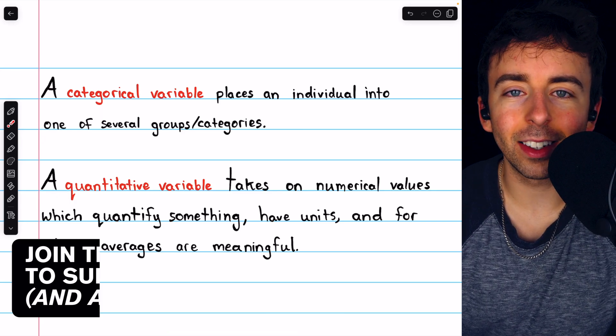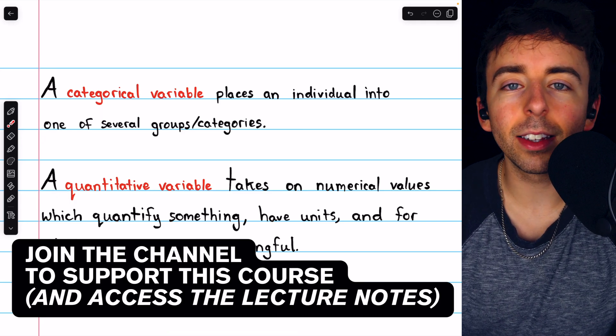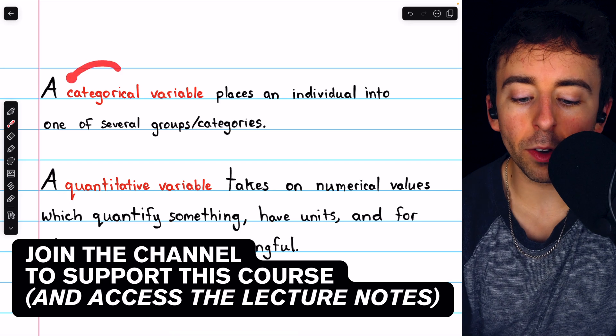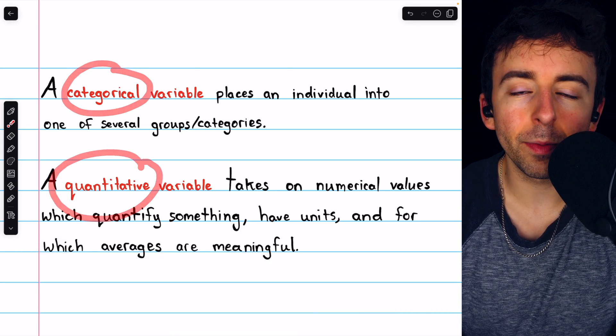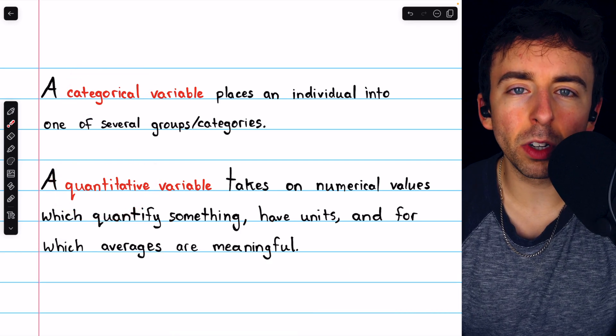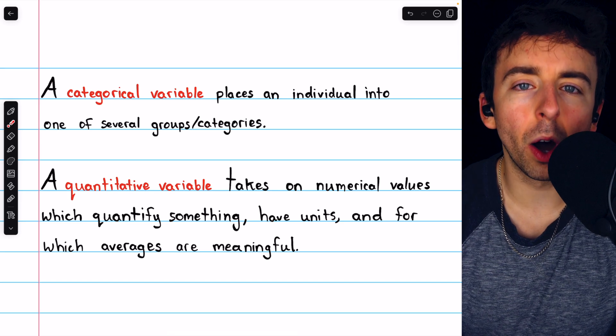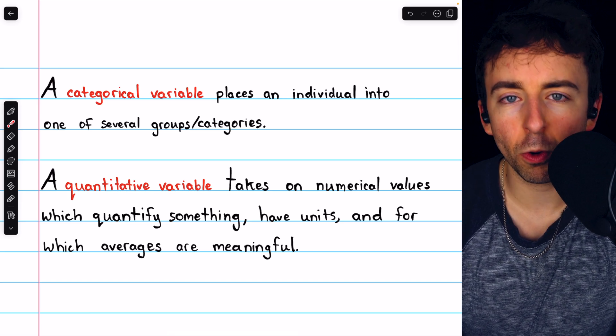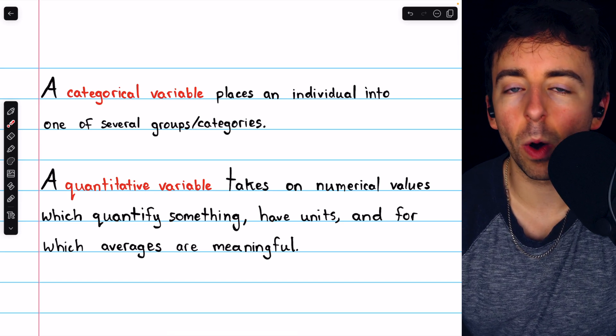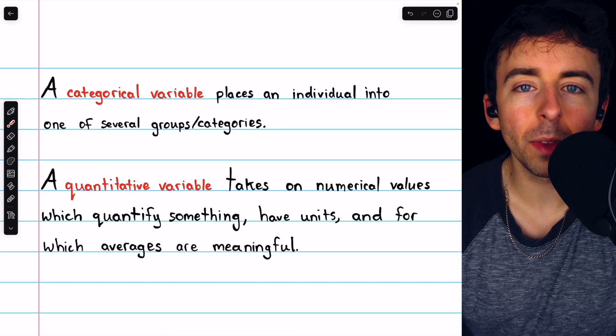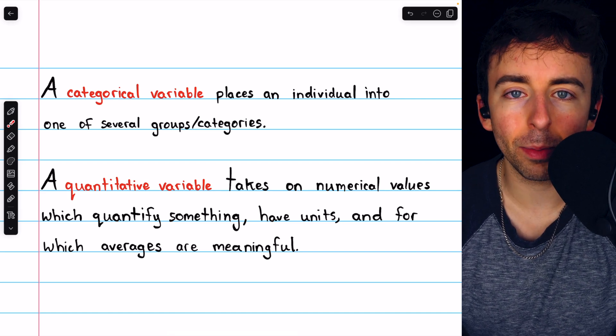A critical part of our data analysis and statistics is understanding the type of data we're looking at, whether categorical or quantitative. In this video, we'll define these two terms and see some of the nuance that comes into play when trying to classify data as quantitative or categorical, and we'll of course look at several examples.